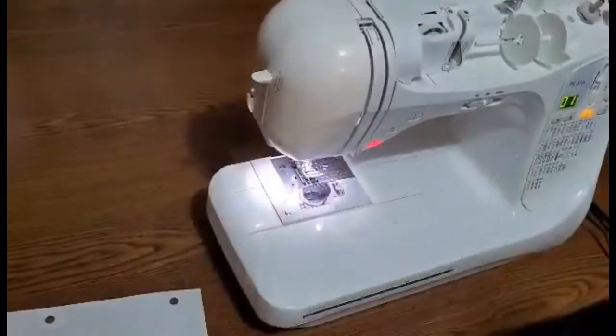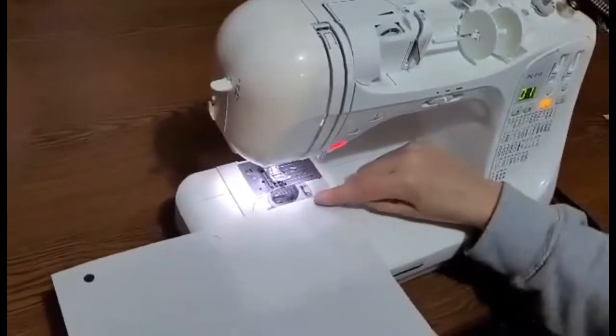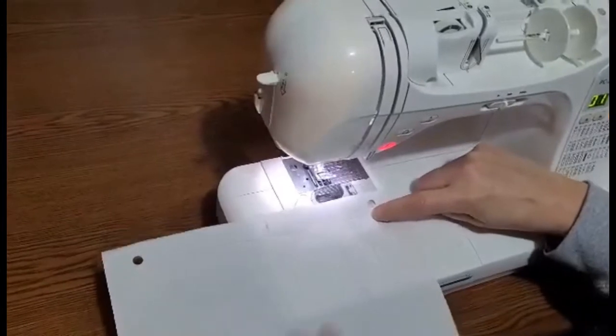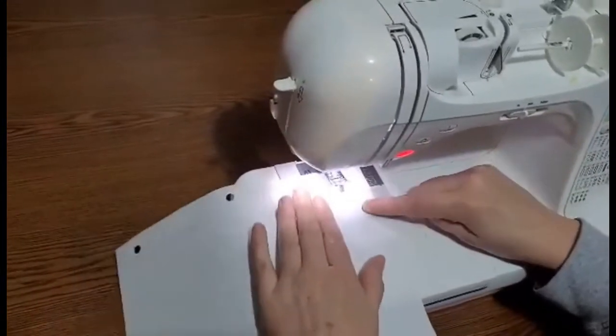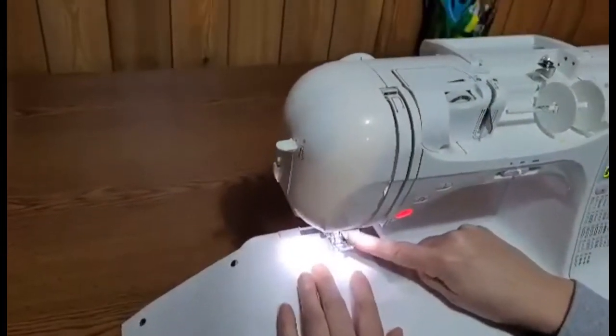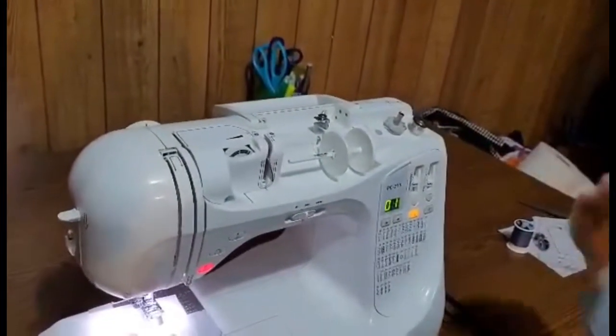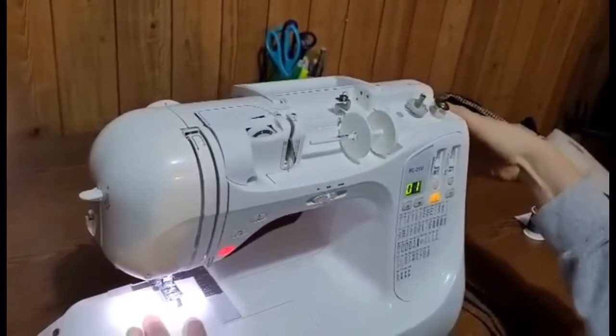So today we're going to practice sewing straight lines. You're going to take a piece of notebook paper and we're going to start at the beginning. You're going to actually put the blue line underneath your needle. Hand wheel goes towards yourself until the needle drops down on the blue line.